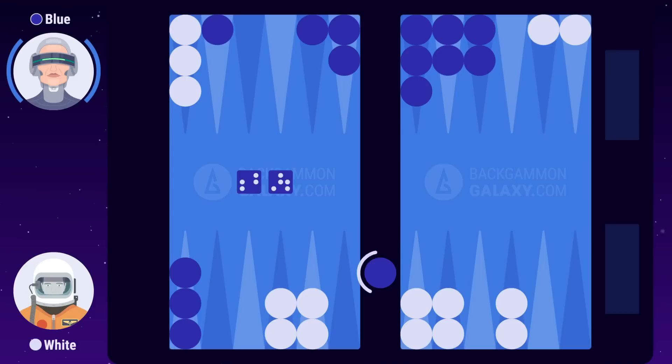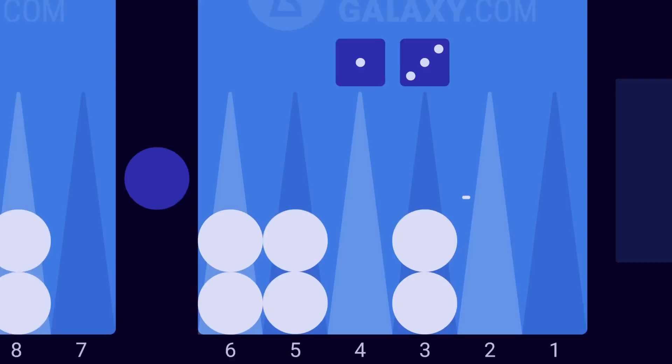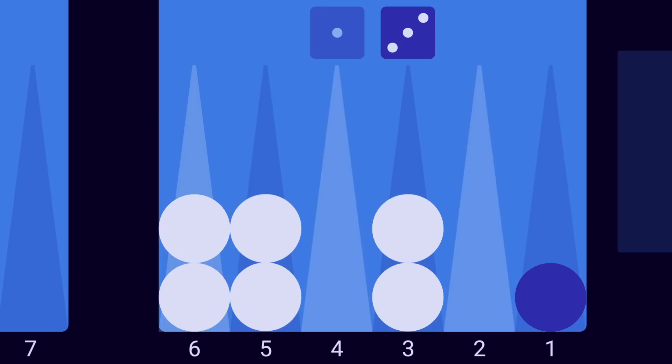Blue must now use her roll to enter her checker into white's home board before moving any other checkers. Blue rolls 1-3. Since white is occupying the three point, blue is forced to enter on the one point. A checker is entered by moving it to an open point in your opponent's home board.